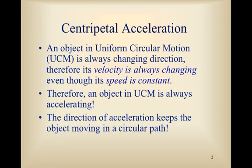An object in uniform circular motion, if you recall, is always changing direction. Therefore, its velocity is always changing, even though its speed is constant. Therefore, an object in uniform circular motion is always accelerating, since its velocity is always changing, and the direction of the acceleration is what keeps the object moving in its circular path.